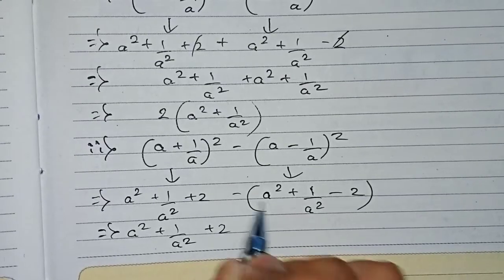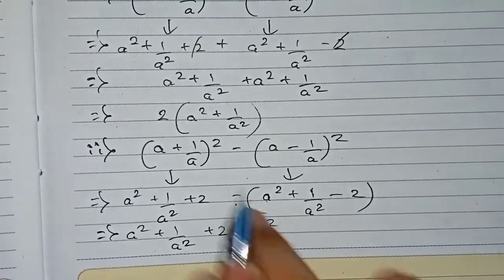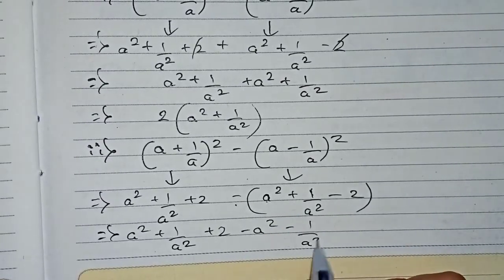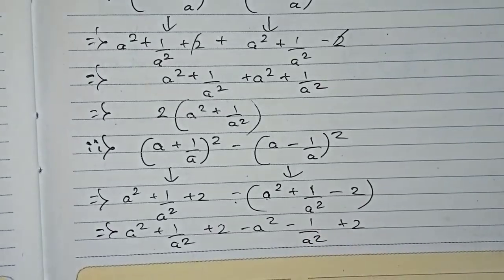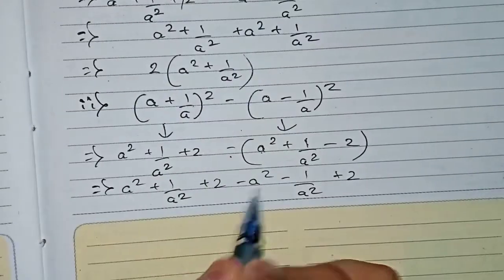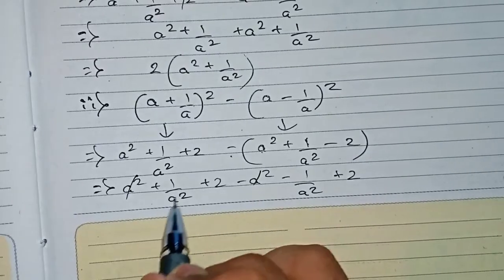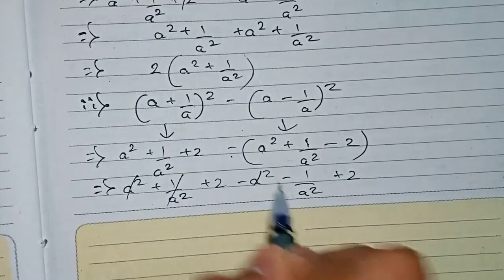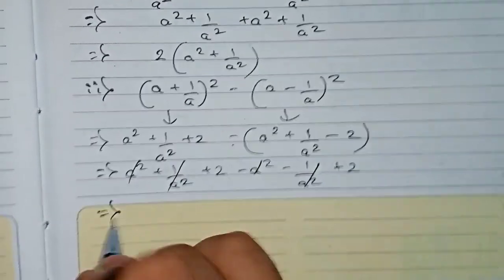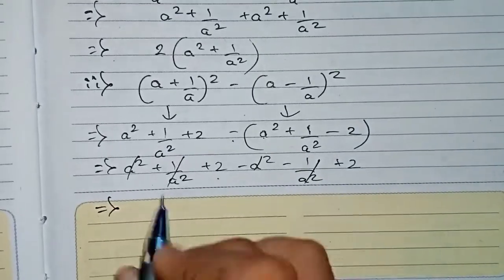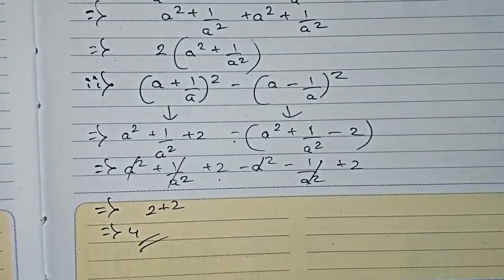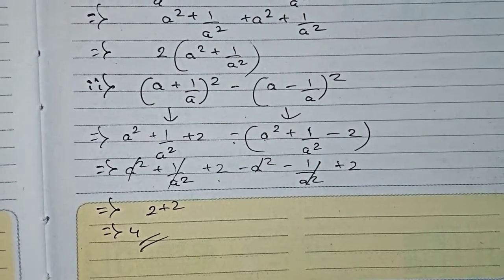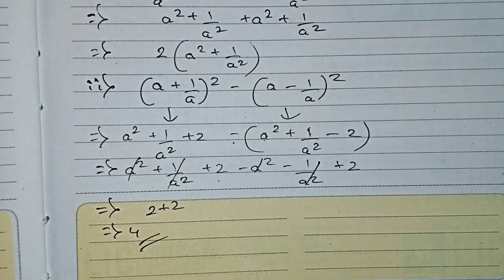After opening the bracket, a² and −a² cancel, and 1/a² and −1/a² cancel. Only +2 and +2 remain, giving 2 + 2 = 4. Therefore, 4 is the final answer for this question. Thanks for watching this video — please subscribe to my channel for more solutions.